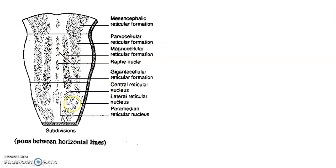Cells of the reticular formation are divided into those at the midline, like raphe nuclei, then paramedian, and then lateral, in that order.